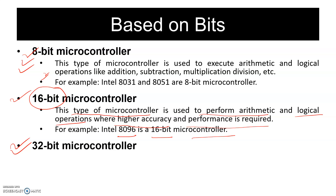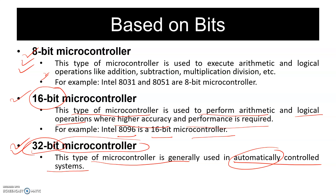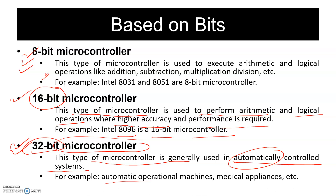The 32-bit microcontroller is generally used in automatically controlled systems. If you want to embed an automatic feature into a system, you can use a 32-bit microcontroller. Examples include automatic operational machines, medical appliances, washing machines, and digital microwaves.